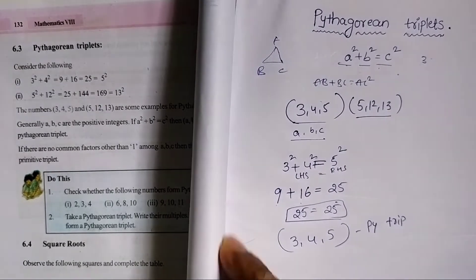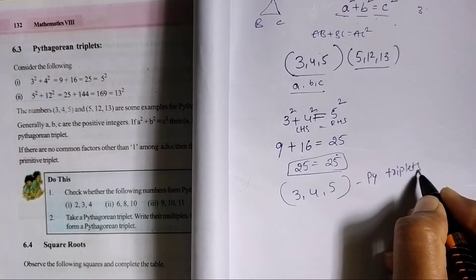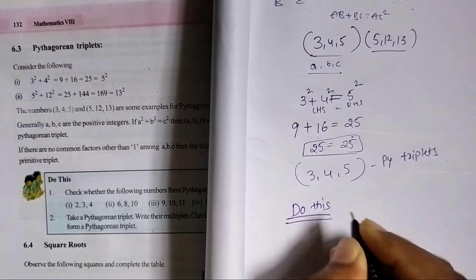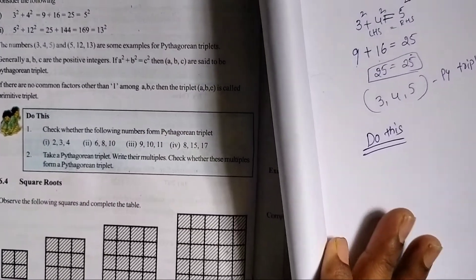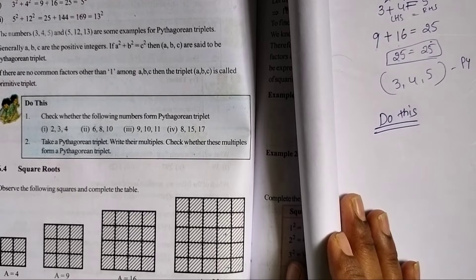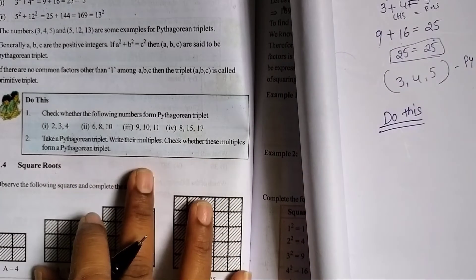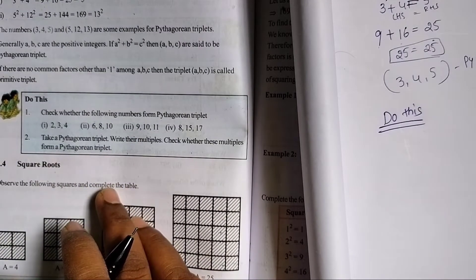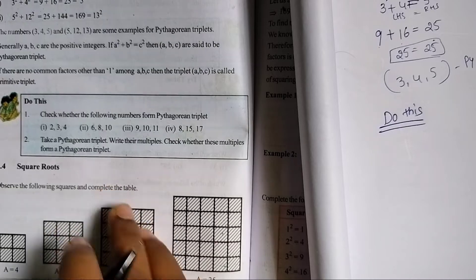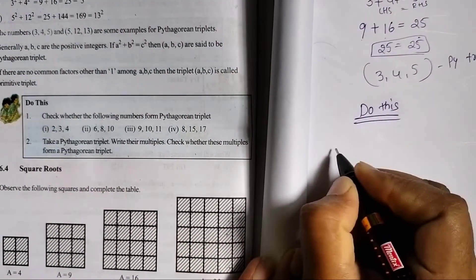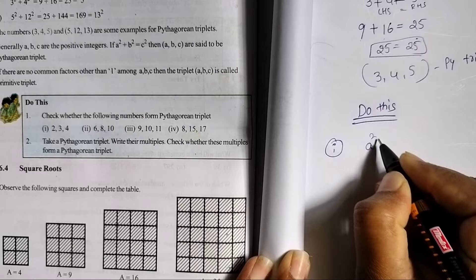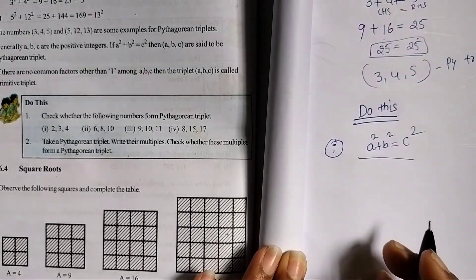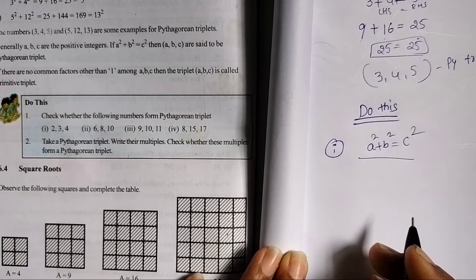Now, check whether the following numbers form Pythagorean triplets. If we check whether numbers are Pythagorean triplets, we verify the condition a square plus b square is equal to c square.